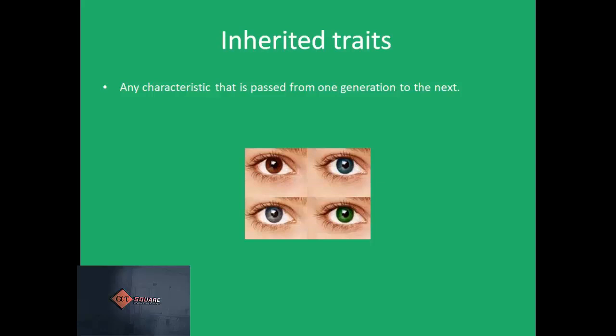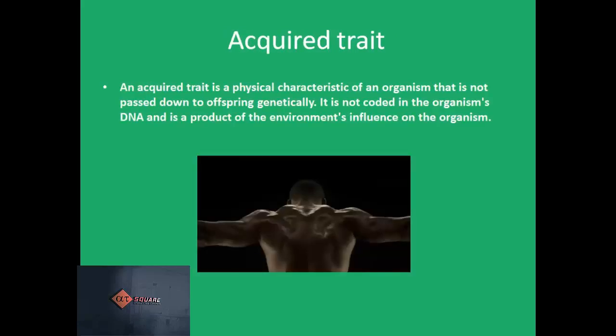Inherited trait is any characteristic that is passed from one generation to the next. In contrast to this, there are acquired traits. An acquired trait is a physical characteristic of an organism that is not passed down to offspring genetically. It is not coded in the organism's DNA and is simply a product of the environment's influence on the organism. Examples of acquired traits are children learning to read, a horse learning to stay away from an electric fence, larger muscle size from exercise, etc.